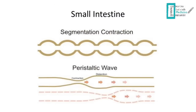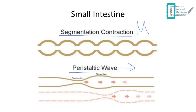Now, the small intestine. We have two kinds of movement: segmentation contraction, responsible for mixing, and the peristaltic wave, responsible for pushing content forward. Segmentation is done by the circular layer of the muscularis externa, and the peristaltic wave by the longitudinal layer. The basic electrical rhythm in the small intestine is faster than the stomach: 12 per minute. Parasympathetic increases small intestine movement while sympathetic decreases it. The peristaltic wave keeps pushing content forward until it reaches the ileocecal valve — the sphincter connecting the ileum, the last part of the small intestine, with the cecum, the first part of the large intestine.